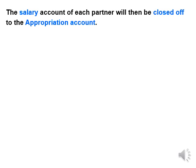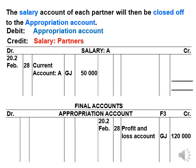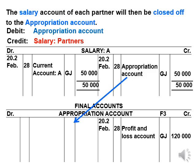Remember, we have three final accounts: in the trading account we calculate the gross profit; in the profit and loss account we calculate the net profit; and in the appropriation account we split the profit. Since the salaries are used to calculate a fair split of the profit, the salary account is closed off to the appropriation account. We will debit the appropriation account and credit the salary account of each partner, which closes the salary account and transfers it to the appropriation account. We have already transferred the net profit from the profit and loss account to the appropriation account, and the salary of each partner now forms part of the sharing of the profit.